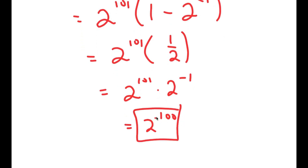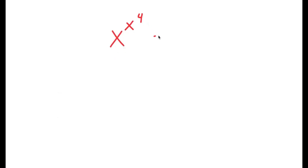So that's the second method of solving this problem. All right, so in this video I'm going to solve the equation x to the power of x to the power of 4 is equal to 64.